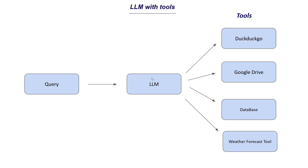Let's say there is an LLM — it can be any LLM, open-source or closed-source like Groq, Ollama, or OpenAI APIs. The user is asking a query and we provide the LLM with different tools. For example, DuckDuckGo provides a tool for the LLM to search the internet in real time. We could also have Google Drive, where documents are stored, and we want the LLM to go through those files and answer questions based on that external data rather than just its training data.